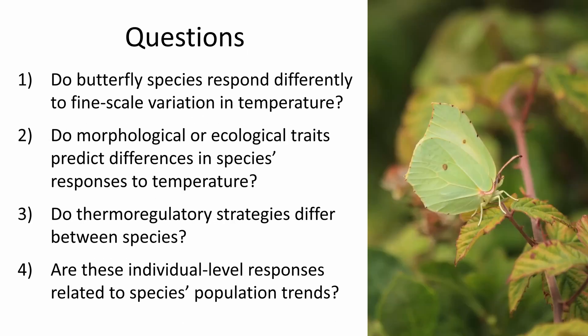In this piece of work we tackled four questions about how butterflies responded on an individual level to changes in temperature. The first was to ask whether butterfly species differ in their response to fine-scale temperature variation. The second was to look across species and see whether there were any particular traits that predicted their responses to temperature. We then went on to think about the thermoregulatory strategies that species use, and finally went to see whether these individual-level responses could actually tell us anything about species' long-term population trends.